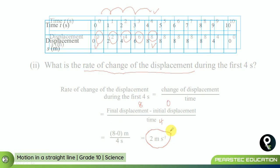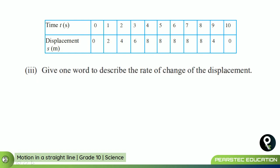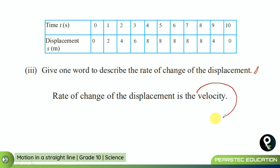The third question says: give one word to describe the rate of change of displacement. The rate of change of displacement is velocity. So we now understand what velocity is — it is the rate of change of displacement. The value 8 minus 0 divided by 4 is the velocity during the first 4 seconds.